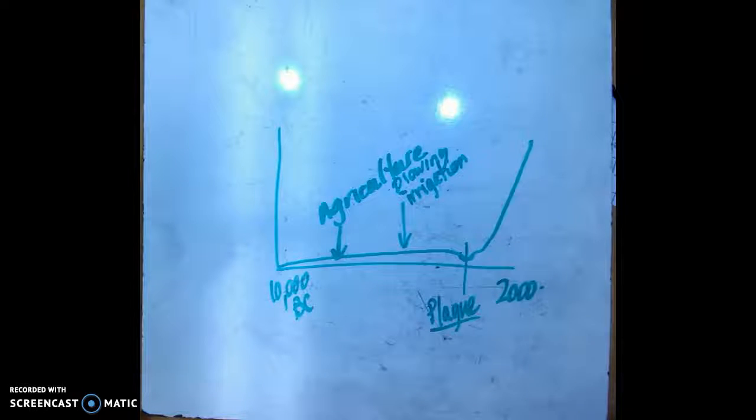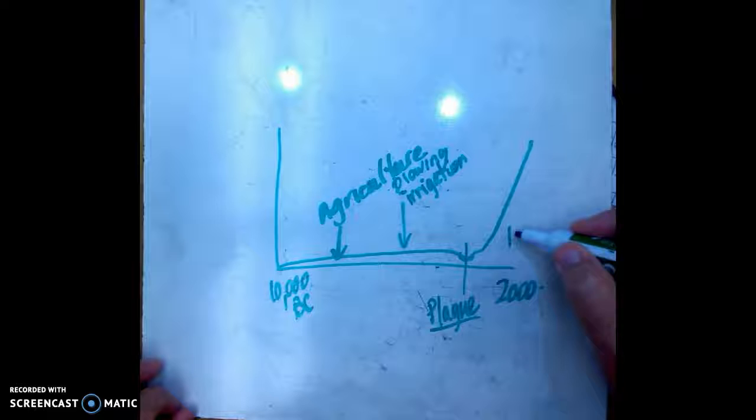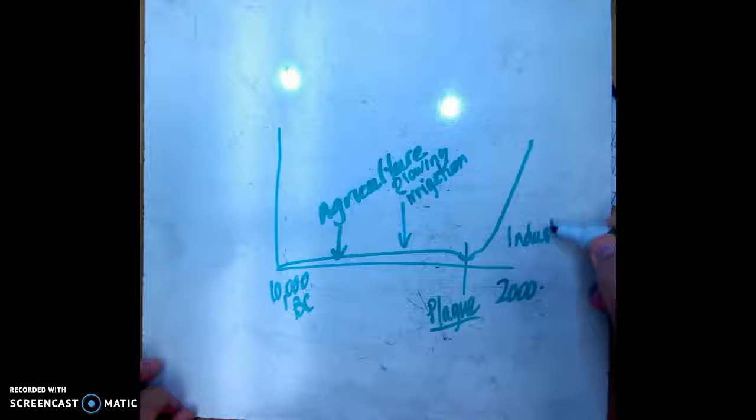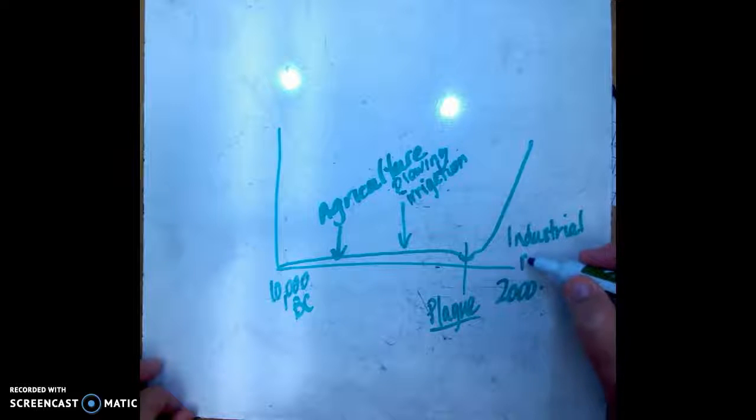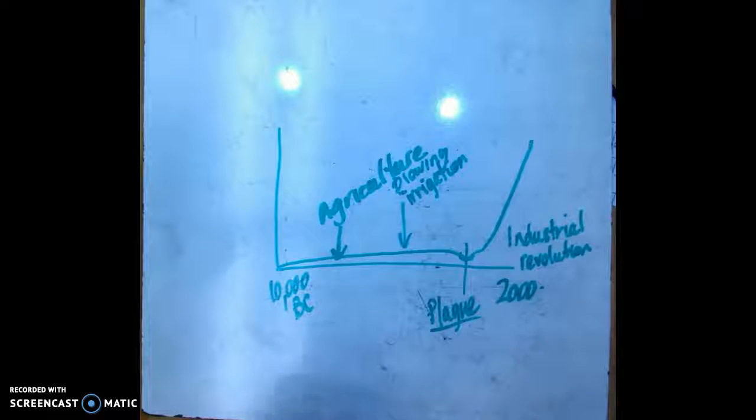And then we have this crazy exponential growth in our population, and that started after the industrial revolution. The industrial revolution brought many changes to society and allowed the human population to actually go like crazy.